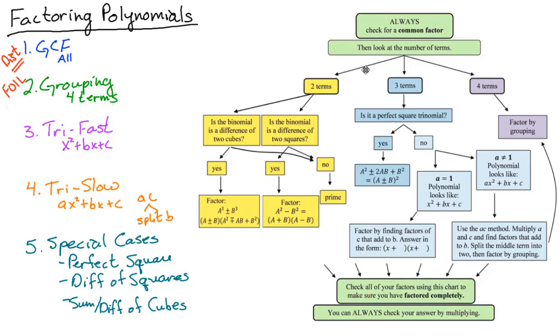Then look at the number of terms. Does it have two, three, or four? If it has four terms, this was the second method we had: factor by grouping. You use a chainsaw and split it up.